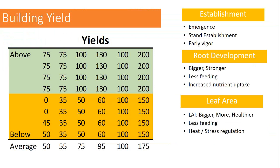Most fields averaging 70–90 bushels per acre have half the field well above and half well below that average. To increase overall yield, we focus on taking below-average areas and building those up. We need to understand why those areas yielded low — was it an establishment issue, a root zone problem from compaction, saturated soils, lack of nutrient uptake, or insufficient leaf area? We can learn a lot by walking bean fields.